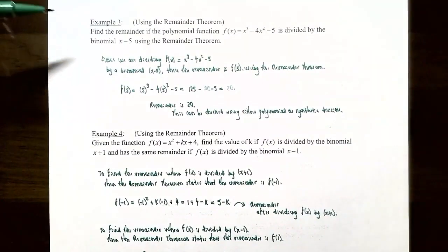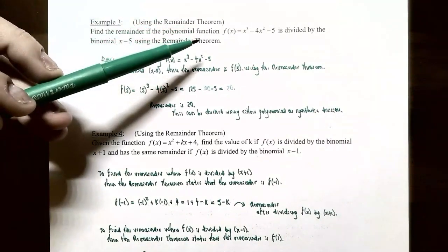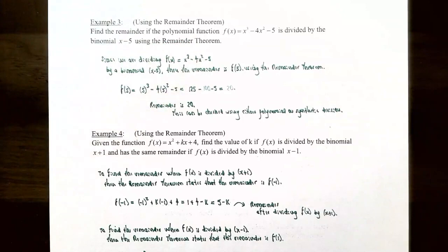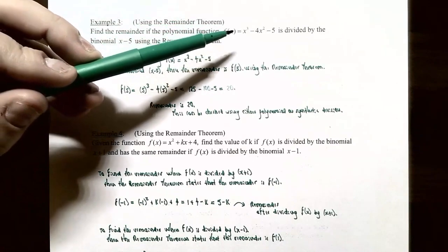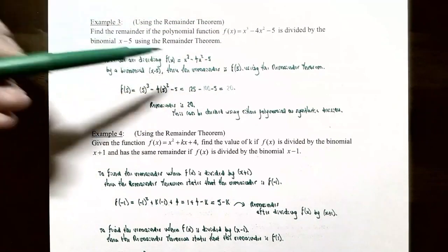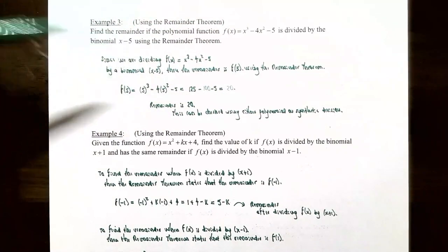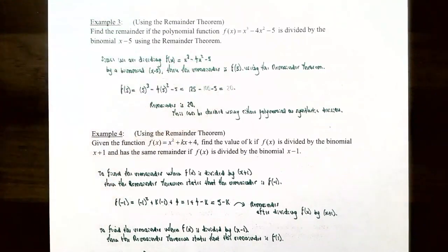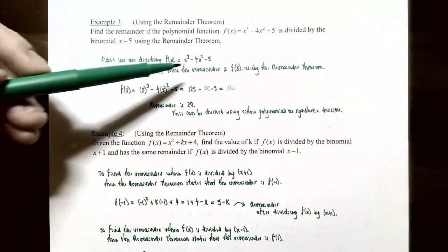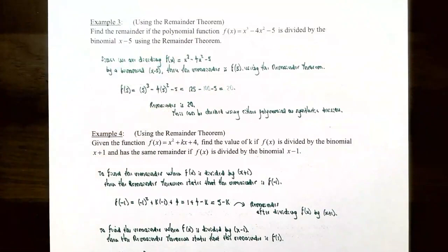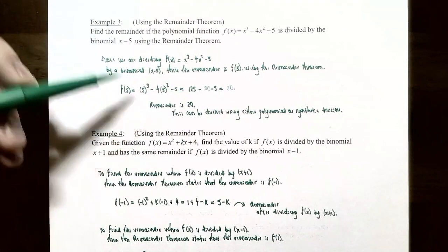Example 3, using the remainder theorem: find the remainder if f(x) = x³ - 4x² - 5 is divided by x - 5. We don't need polynomial division — just evaluate f(5). f(5) = 5³ - 4(5²) - 5 = 125 - 100 - 5 = 20. So the remainder after dividing by x - 5 is 20.